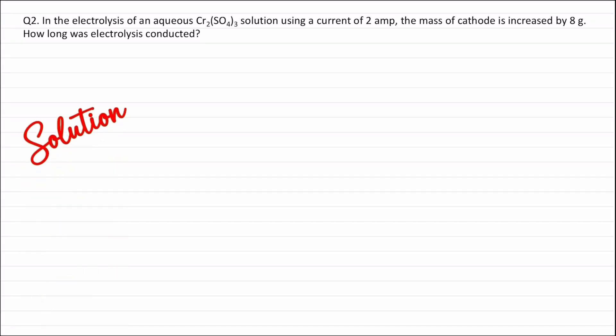During electrolysis, chromium sulfate will break into chromium ions and sulfate ions. Chromium ions will move to the cathode and accept 3 electrons and will be deposited on the cathode. So we can write Cr³⁺ plus 3 electrons forming chromium. These chromium atoms will be deposited on the cathode, which causes the increase in weight of the cathode.